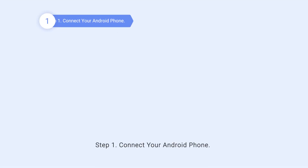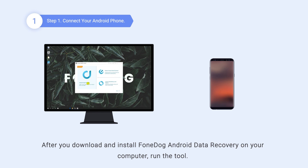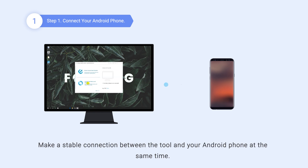Step 1: Connect your Android phone. After you download and install PhoneDog Android Data Recovery on your computer, run the tool. Make a stable connection between the tool and your Android phone at the same time.